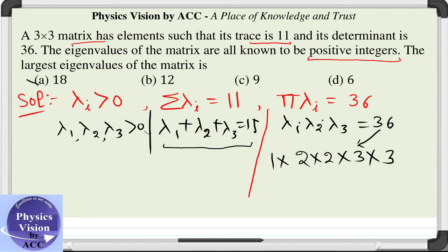So we cannot have a number greater than 11 in the option. So 18 is definitely wrong, 12 is also incorrect for sure. So we are left out with two options only: 9 and 6.